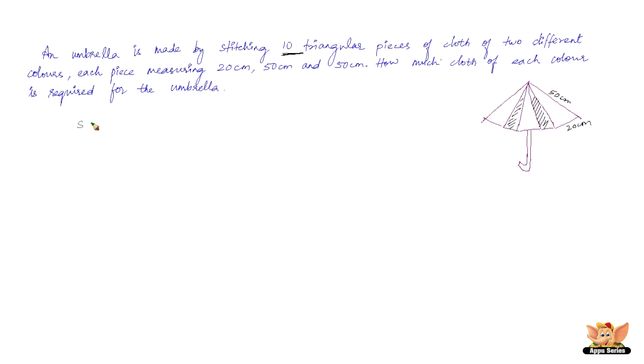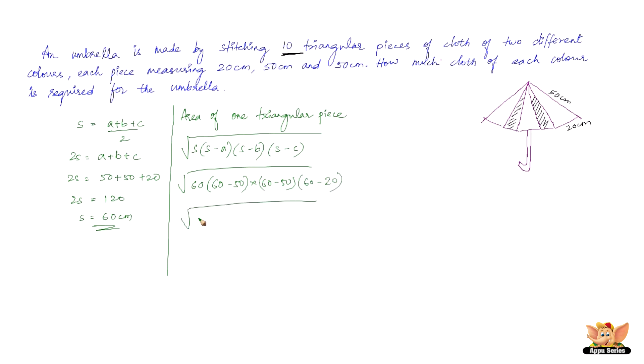So let's start away by finding S which is equal to A plus B plus C by 2, or 2S equals A plus B plus C. So here we've got all the sides that is 50 plus 50 plus 20. So 2S equals 120 or S is equal to 60 cm. So we've got S and we've got the rest of the three sides to apply in Heron's formula. So now let's first find out the area of one triangular piece. Area of one triangular piece would be square root of S into S minus A into S minus B into S minus C, which is nothing but 60 into 60 minus 50 into 60 minus 50 into 60 minus 20, which is 60 into 10 into 10 into 40. So the square root of this is nothing but 200 root 6 cm square.